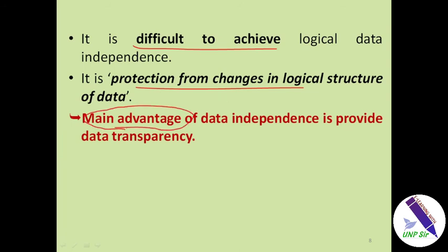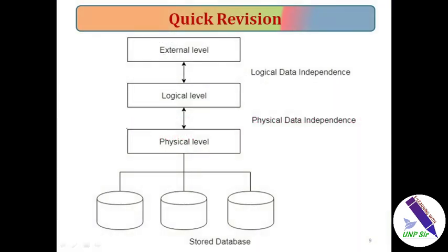The main advantage of data independence is to provide data transparency. Transparency means that the user's data is always available to them in the usual manner, even after changes are made at the conceptual schema or physical schema. The user has no idea about those changes — he or she is getting data in a usual manner. Users are just accessing their data 24 by 7, and the user is not aware of where the actual data is stored.